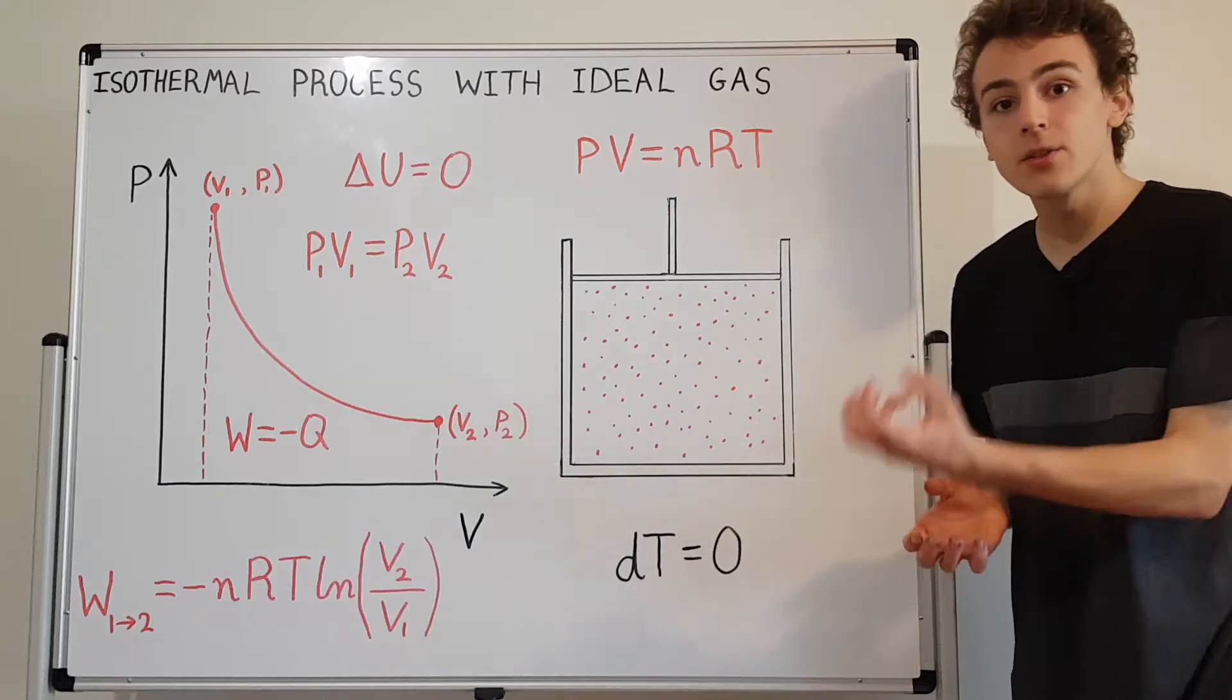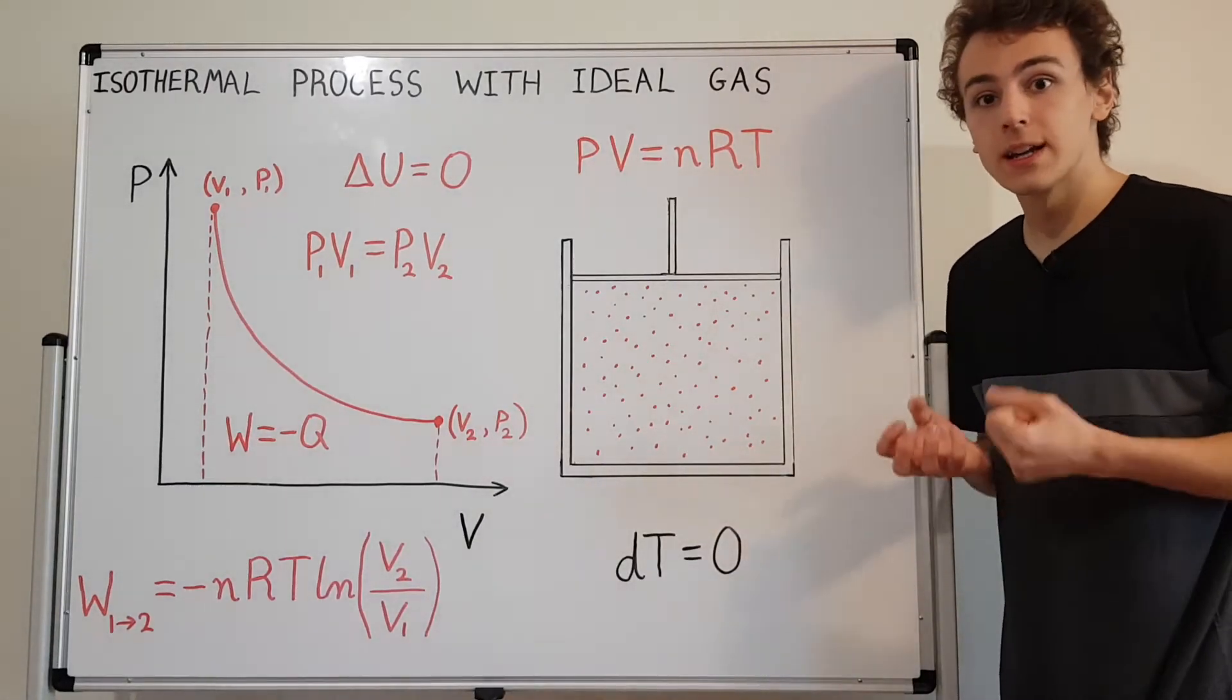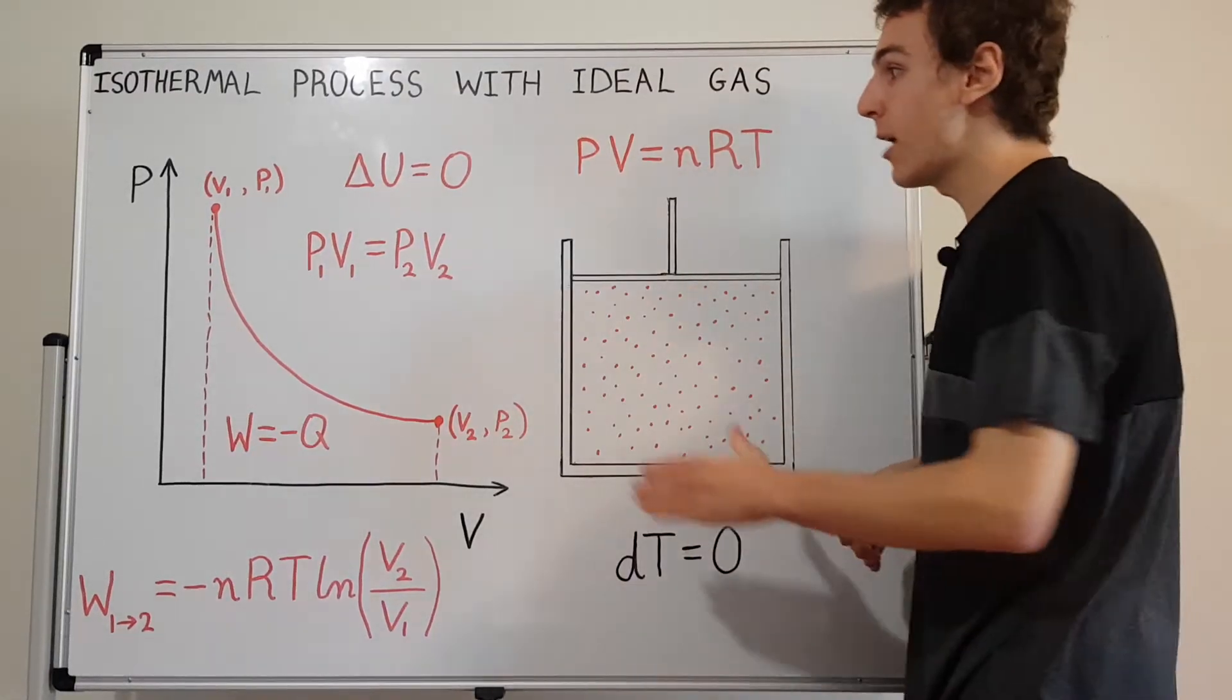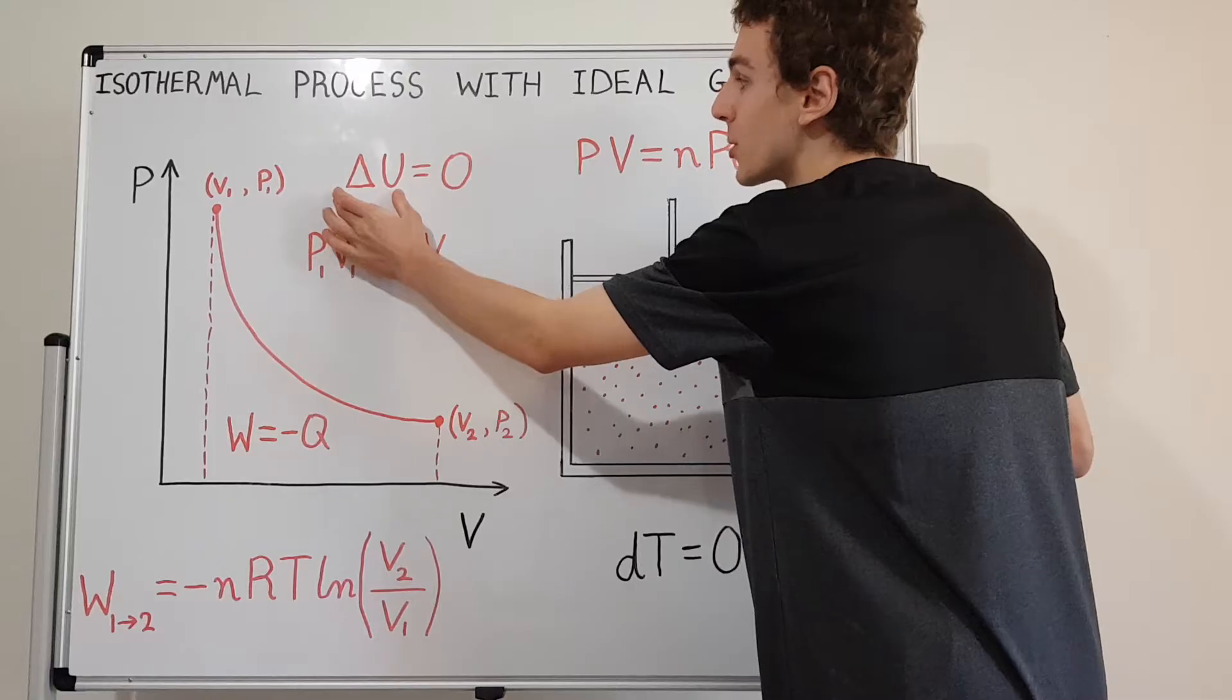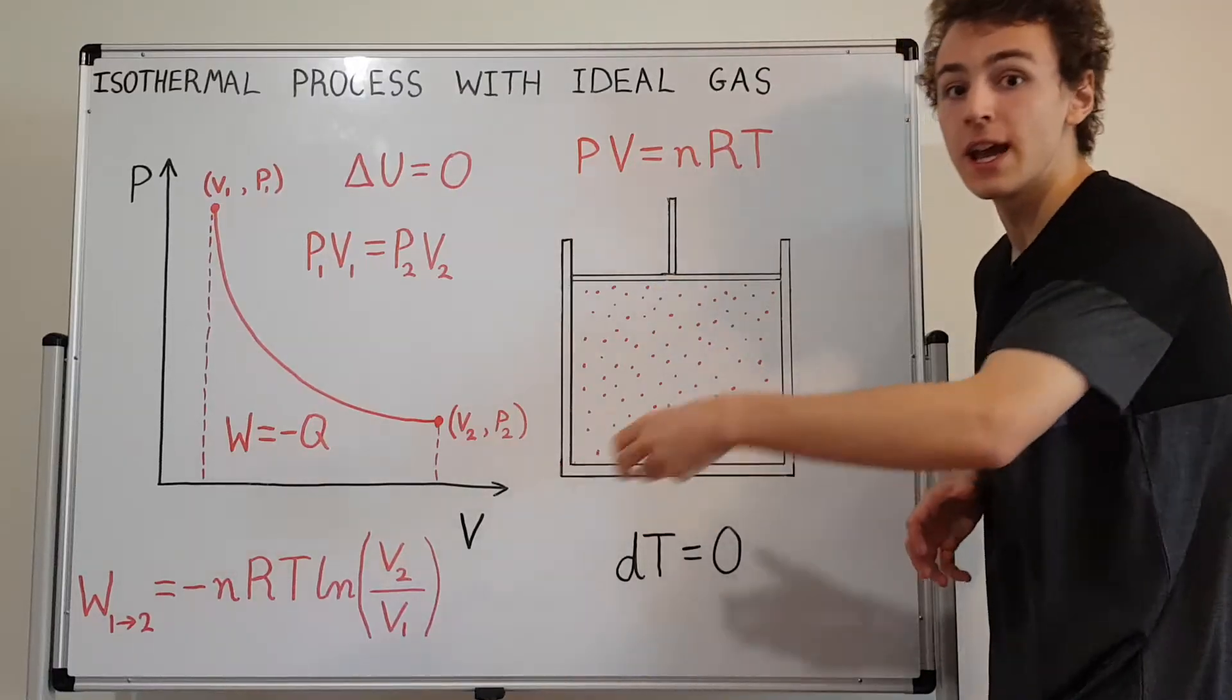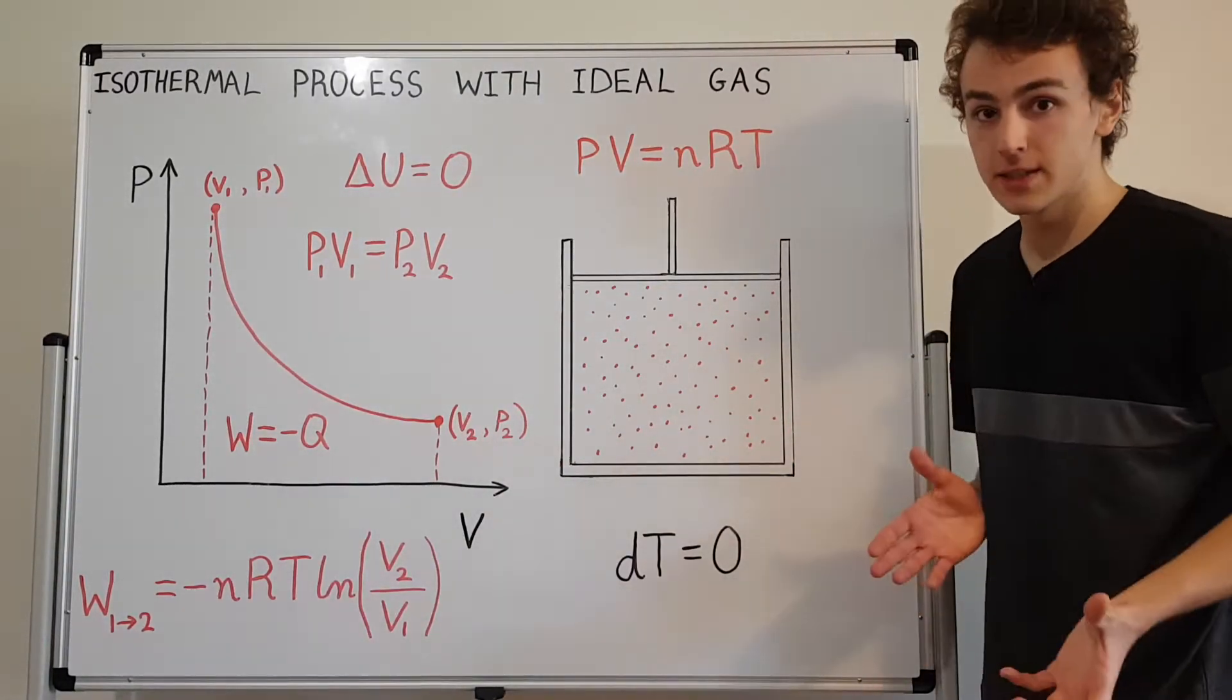If we use the isothermal condition and the ideal gas law together, what we're actually going to see is that the internal energy doesn't change. So the internal energy is constant as well. Now how can we actually summarize that? We can say delta U, the change in internal energy, is zero. This is true for an ideal gas because of the relationship between the internal energy and temperature of an ideal gas. This may not be true for other systems.